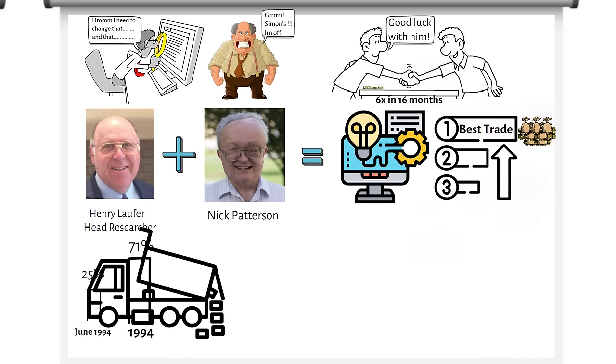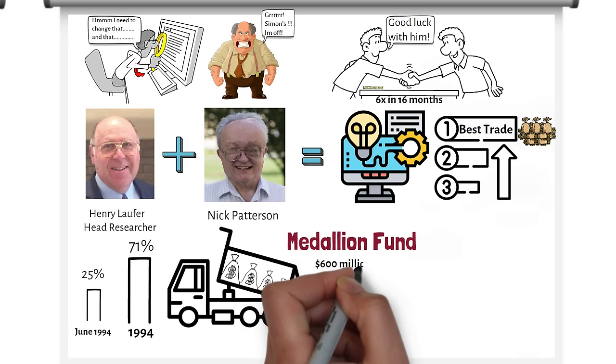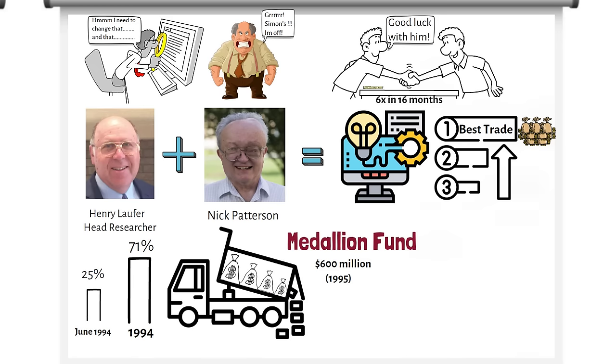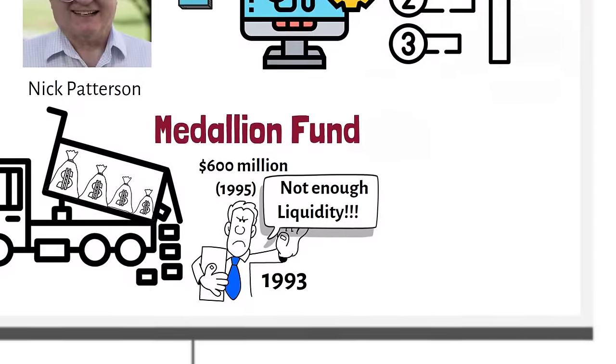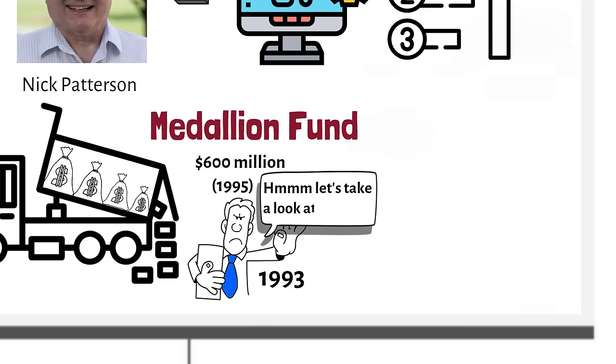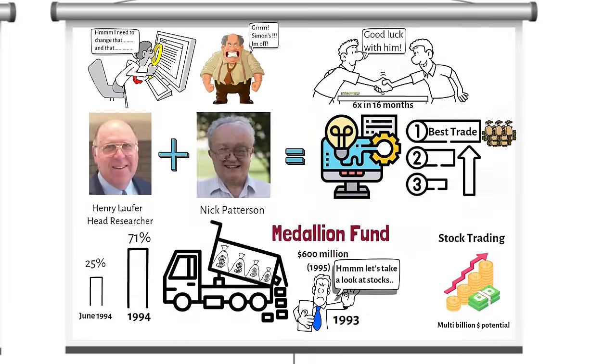The great returns attracted investors by the truckload, taking Medallion's fund size to $600 million in 1995. Medallion stopped accepting new money in 1993 due to the markets not being deep enough to handle any more money. Simons' only way out of this problem was to master stock trading. Stock markets had much more depth and could take several billions of dollars in trade.